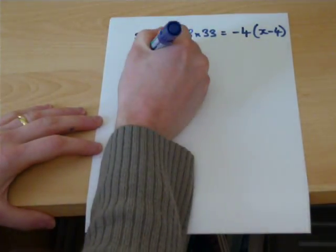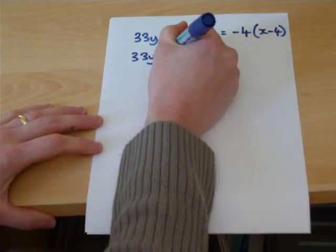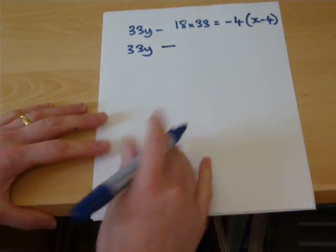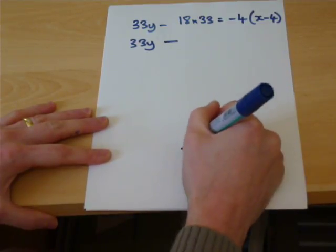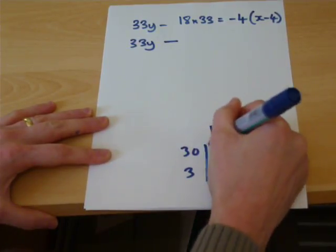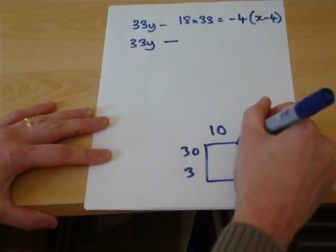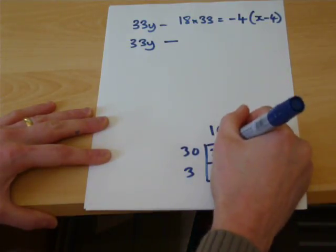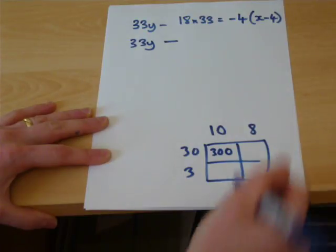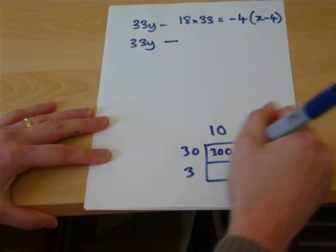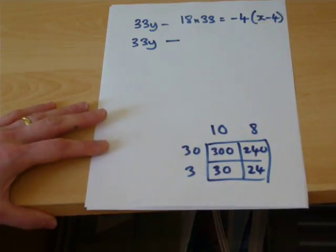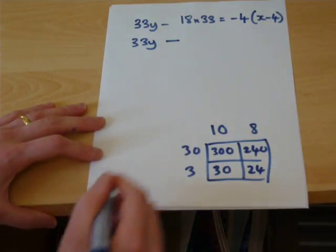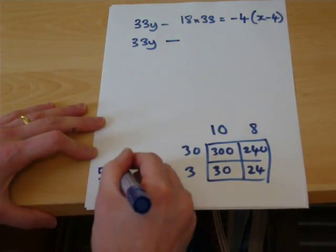And then, of course, pretending we have no calculator. 18 times 33: So, 33, 300, 240, 30, 24. That ends up being 594.